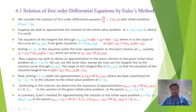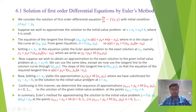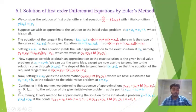We use the same idea except we now use the tangent line to the solution curve through (x₁, y₁). The slope of this tangent line is f(x₁, y₁), so that the equation of the required tangent line is y(x) = y₁ + f(x₁, y₁)(x − x₁). Setting x = x₂ yields the approximation y₂ = y₁ + h·f(x₁, y₁). Continuing in this manner, we determine the sequence of approximations yₙ₊₁ = yₙ + h·f(xₙ, yₙ), for n = 0, 1, 2, ... at the point xₙ₊₁ = xₙ + h.